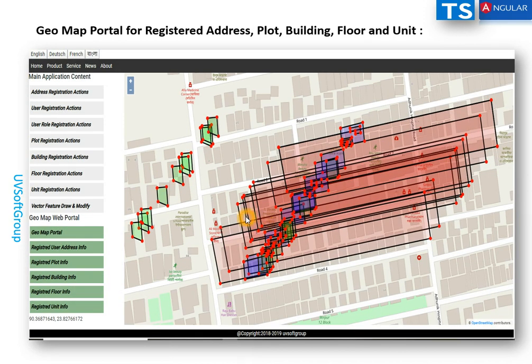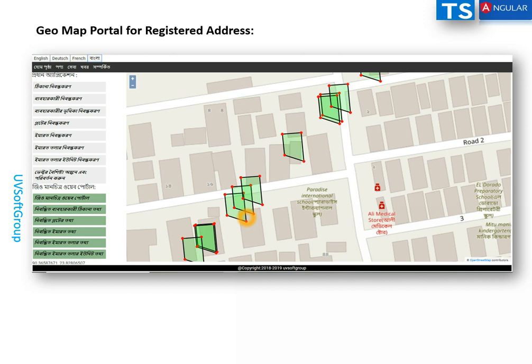Maybe police need to see the detailed pictures, or fire services need them, or another institute that is responsible only for registering addresses — it doesn't matter whether it's addresses for persons, plots, buildings, floors, or units. The application is really well divided into a component management system, so you can very quickly shift or ship what the end client needs — whatever combination of components is required.